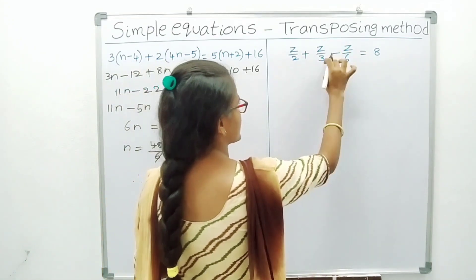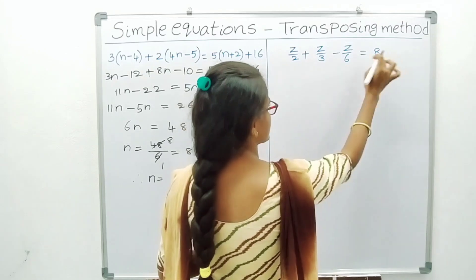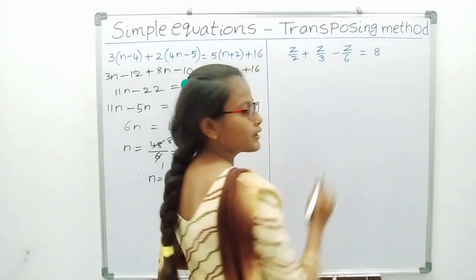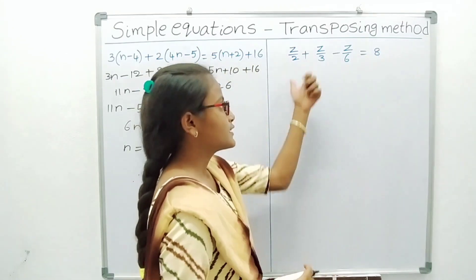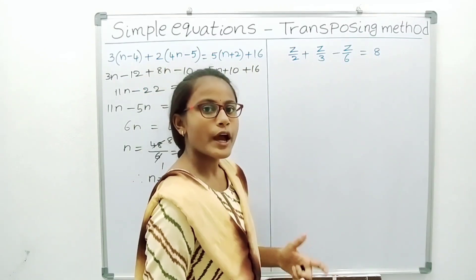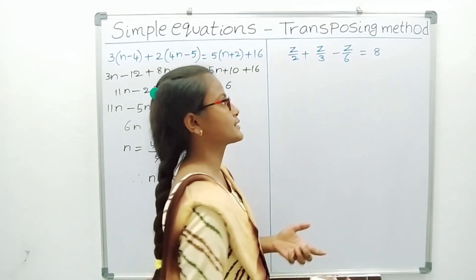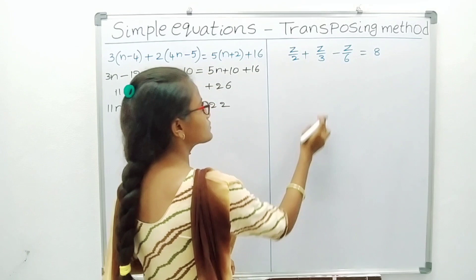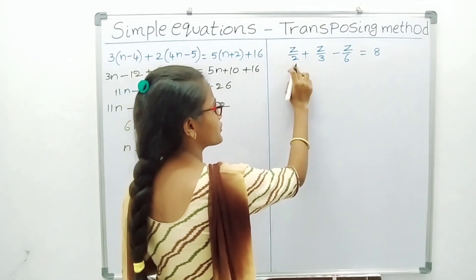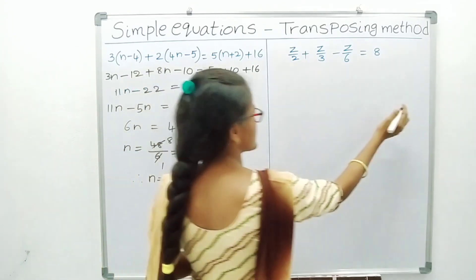Next problem: z by 2 plus z by 3 minus z by 6 is equal to 8. For this problem we have to find the LCM. LCM of 2, 3, and 6 is what?